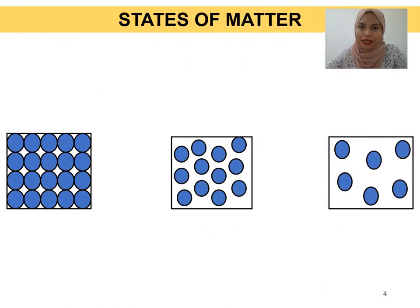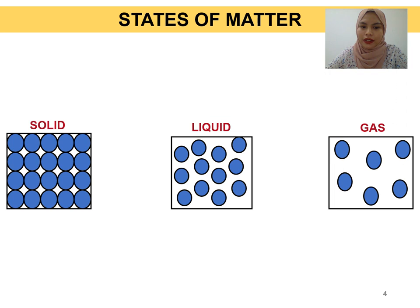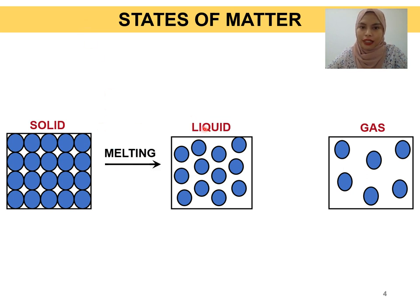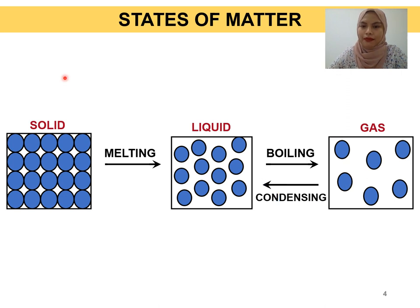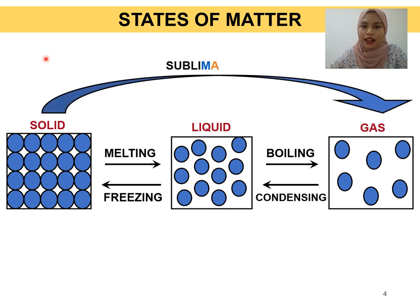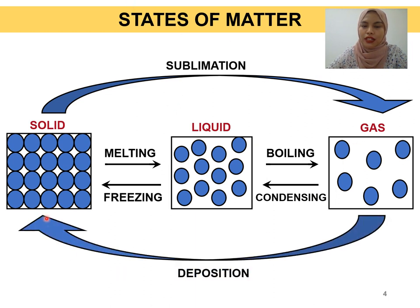Back in high school, we learned about three types of states of matter: solid, liquid, and gas. The particles of solid are closely packed. Particles of liquid are less packed, and particles of gas are far apart. The process from solid to liquid is called melting, from liquid to gas is boiling, from gas to liquid is condensation, from liquid to solid is freezing, from solid to gas is sublimation, and from gas to solid is deposition.